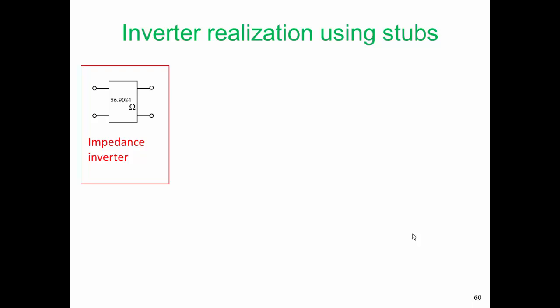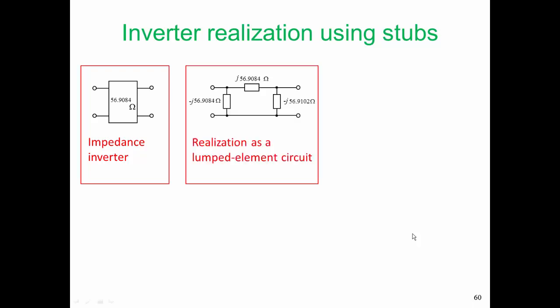Let's review the realization of an impedance inverter using stubs. The exact realization is this pi arrangement of impedances, and these are frequency independent impedances. We know of nothing that can realize these frequency independent reactance values. If we used lumped inductors or capacitors, they will have a strong frequency dependence—linear in the case of an inductor, or inversely proportional to frequency in the case of a capacitor.